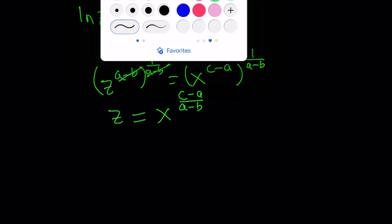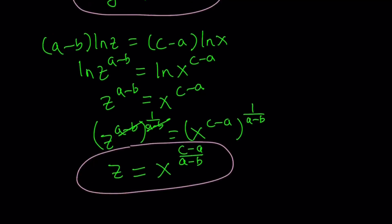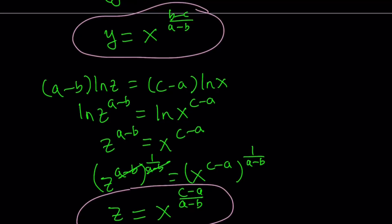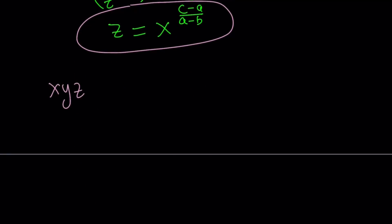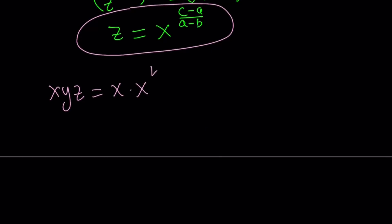So this is another thing that we're going to use. Let's go ahead and frame that as well. Now we have y and z and now we're going to put it all together because our goal is to evaluate xyz. Remember? So let's go ahead and put it together. xyz is equal to x times y which is x to the power b minus c over a minus b times z which is x to the power c minus a divided by a minus b. Now this is just x so we can write it as x to the first power and on the right hand side we all have the same base. So when you multiply powers with the same base you add the exponents. So let's go ahead and add the exponents and write xyz as x to the power 1 plus b minus c over a minus b plus c minus a over a minus b.